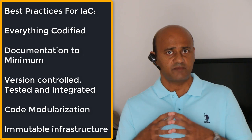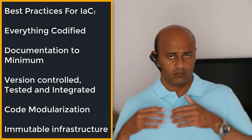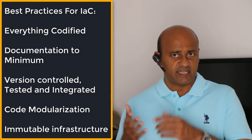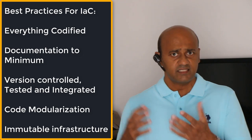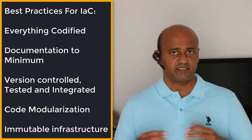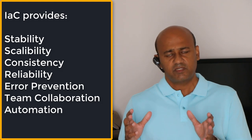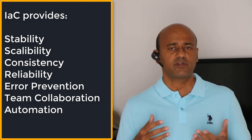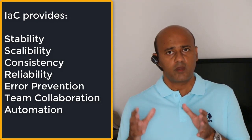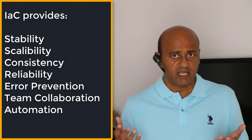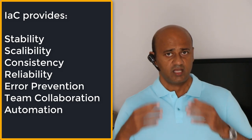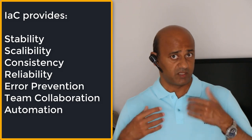Infrastructure as code enables DevOps teams to test applications in production-like environments throughout the development lifecycle. Teams can provision multiple environments — staging, development, and production — and test common deployment issues. The cloud dynamically provisions environments down to the IaC definitions, delivering stable environments rapidly and at scale. Teams avoid manual configuration and enforce consistency by representing the desired state, preventing runtime issues and missing dependencies. DevOps teams can deliver applications and supporting infrastructure quickly, reliably, and at scale.